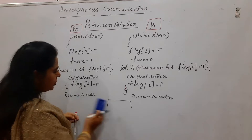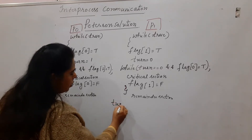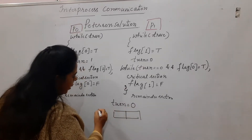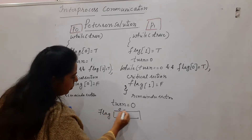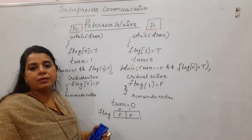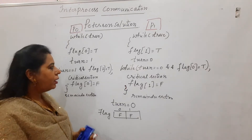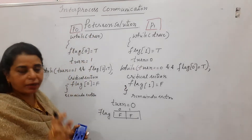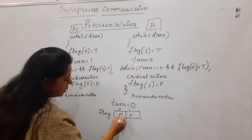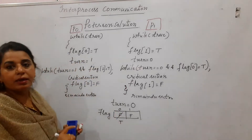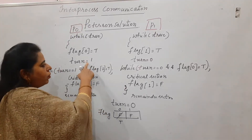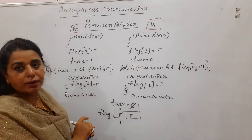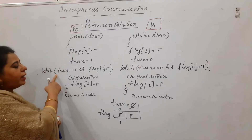First, initialize the two variables used in the solution. The turn variable has an initial value of zero. The other is the flag boolean array, and the initial value for both entries is set to F, meaning the processes are not interested in entering the critical section. Now, process P0 wants to enter the critical section, so it sets its flag to T, indicating interest, then sets turn equal to one.